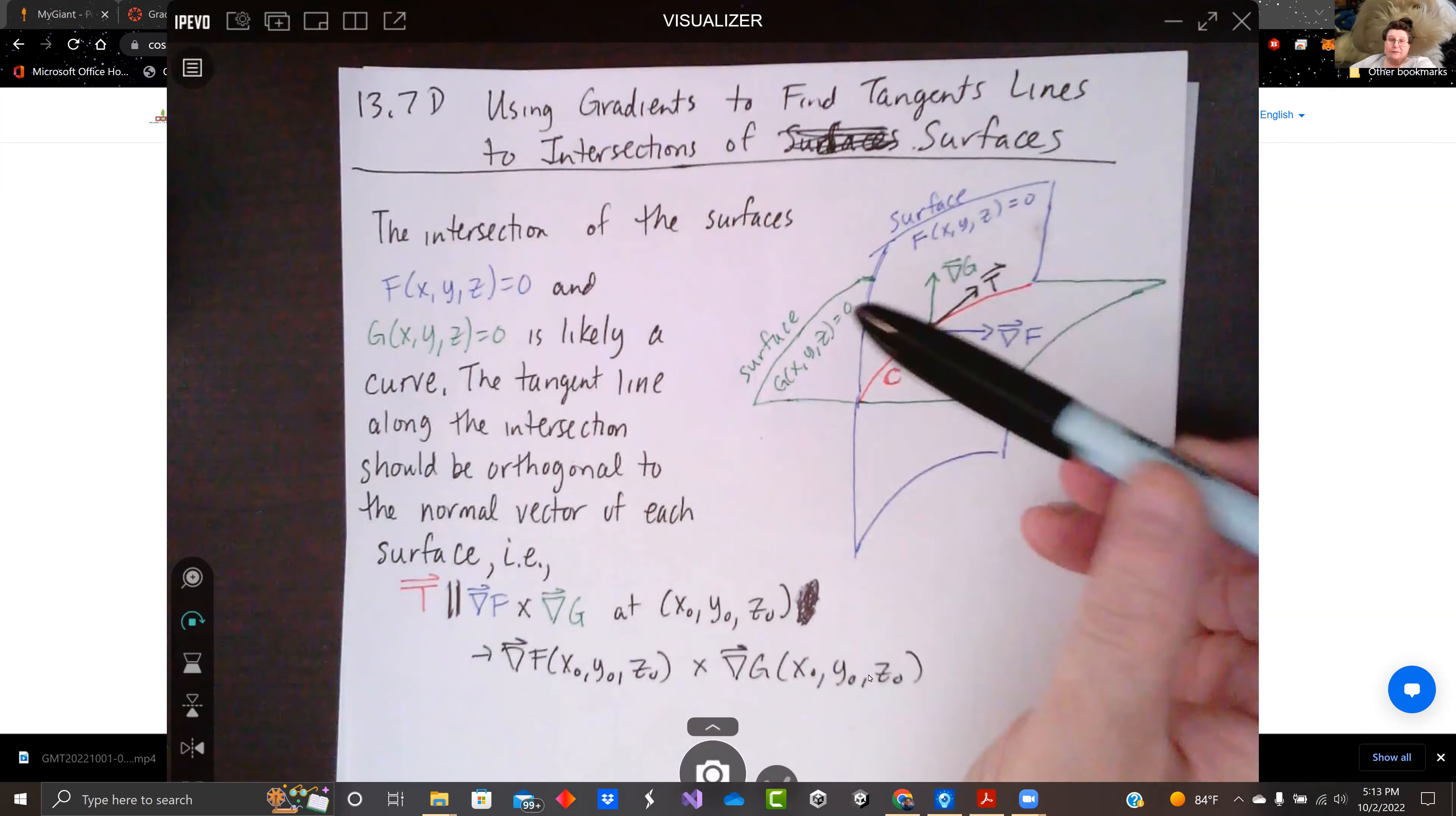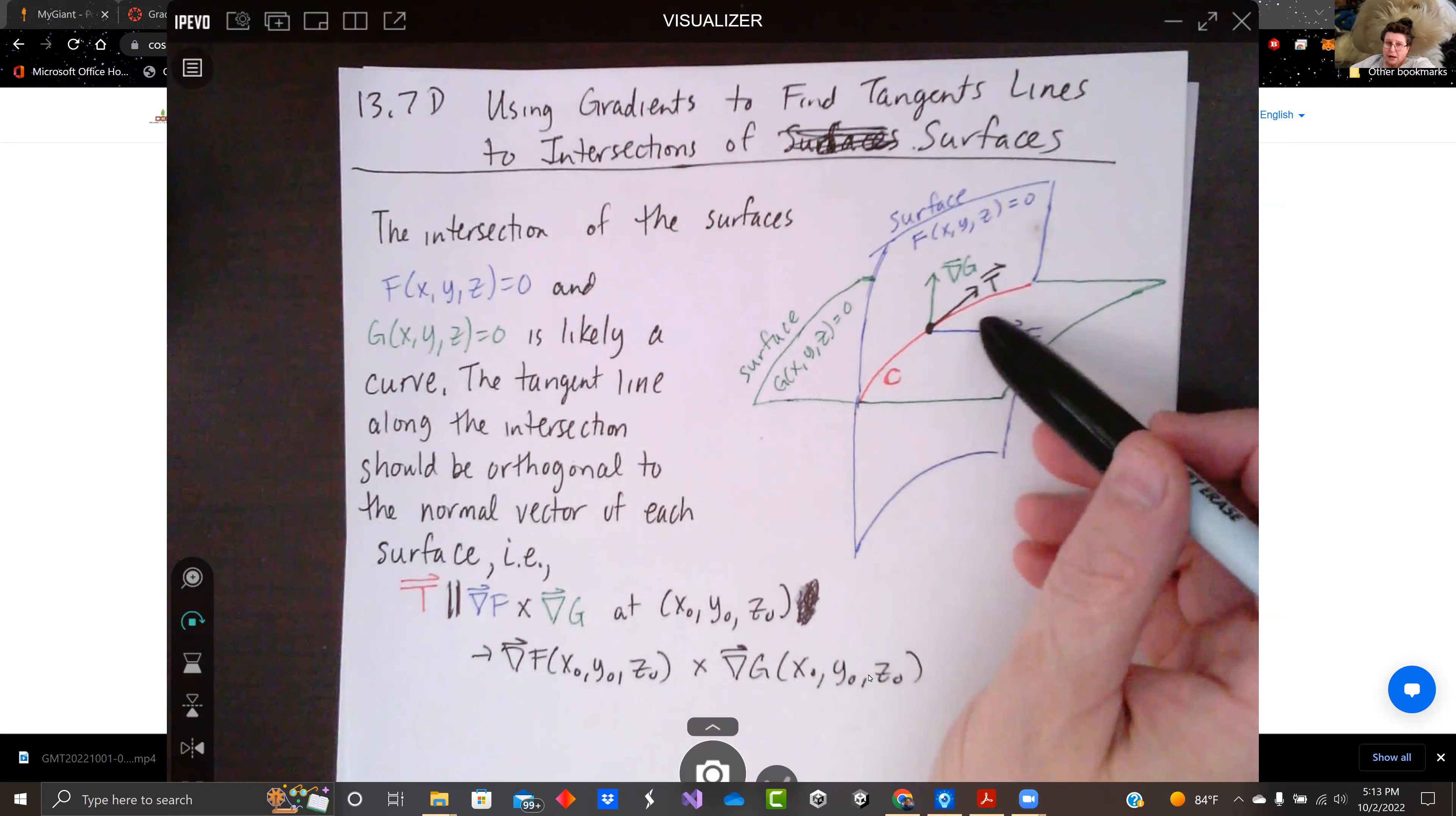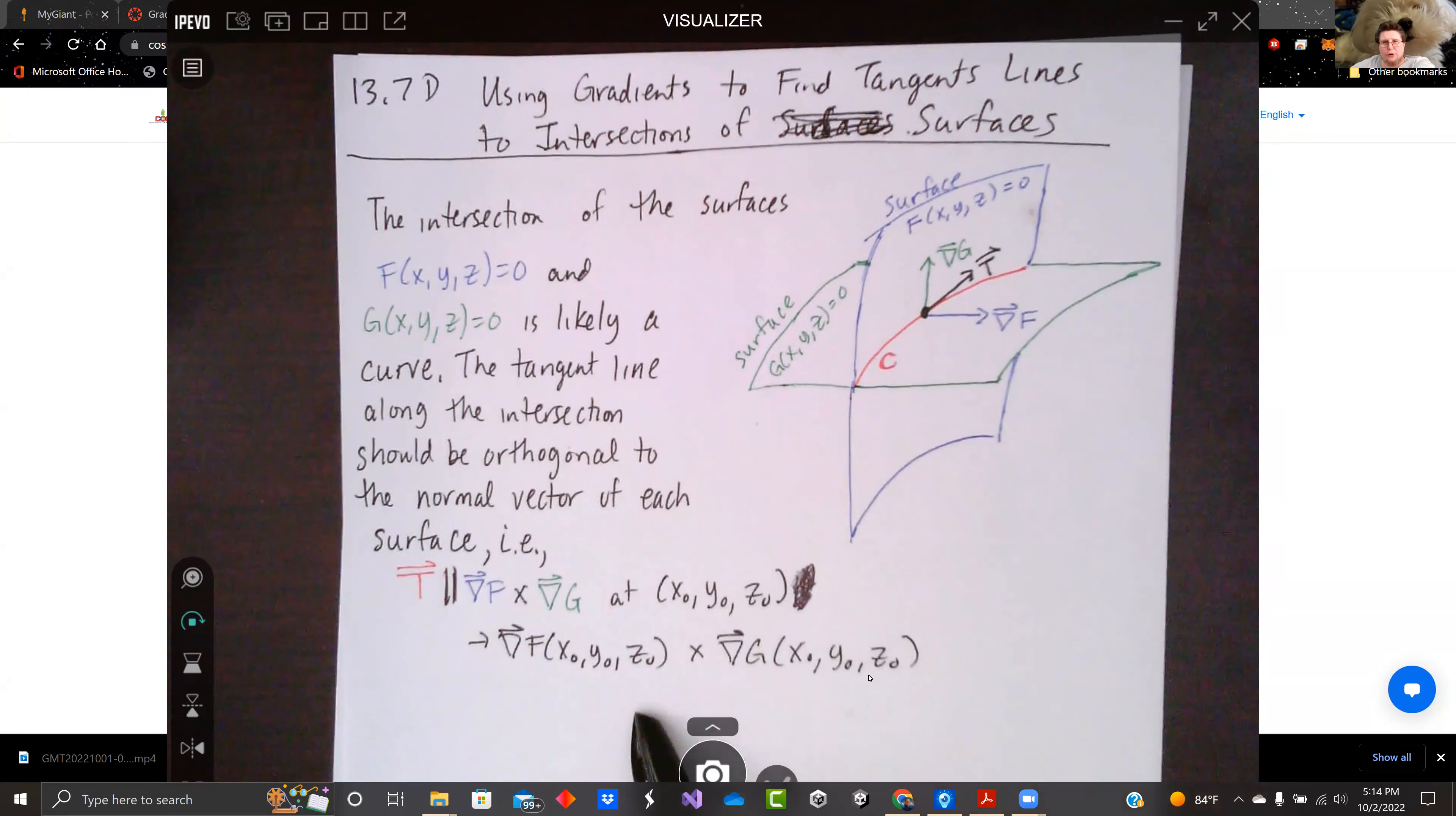And conveniently, we learned gradients produce normal vectors for those surfaces. So if we take the gradient of F and gradient G and cross them, our tangent vectors should be parallel to that cross product.